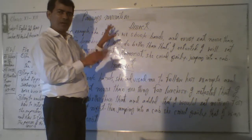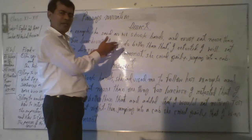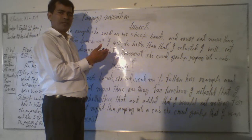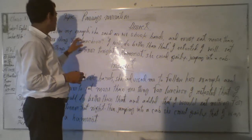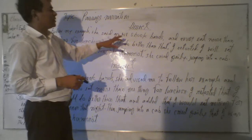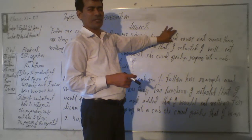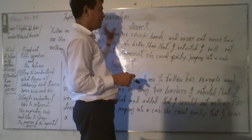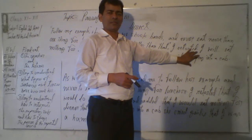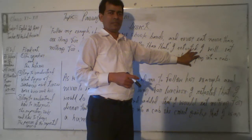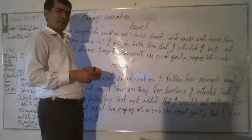Now we know what type of sentences are here, who the persons are, and what kinds of tenses are used — we know all of it. We also know the rule that if the reporting verb is at the end of the reporting speech, we have to bring it to the beginning. If there is any present participle phrase with the reporting verb, we need to bring it to the beginning of the sentence.